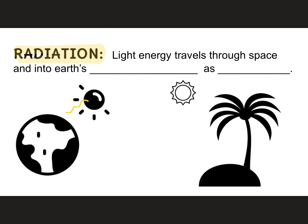Light from the Sun travels through space as waves. When it reaches Earth's atmosphere, it continues to travel as waves coming through the atmosphere and hitting Earth's surface. It is when it hits Earth's surface that it can be transformed into heat. So as it's traveling through the atmosphere, it is not warming air molecules. It has to get down to the ground, to a surface, in order to be absorbed and then transformed into heat.